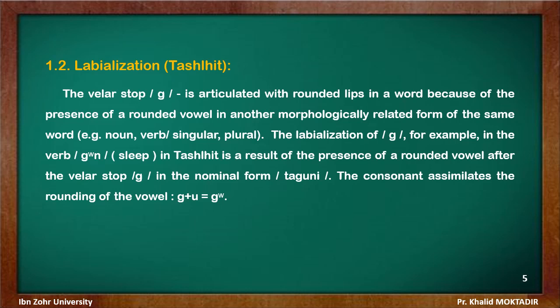Labialization is a result of the presence of a rounded vowel after the velar stop. For example, in the verb 'sleep,' the consonant assimilates the rounding of the vowel — so G followed by U is pronounced as a labialized G.